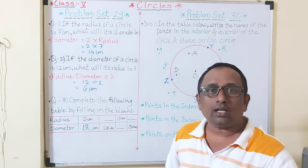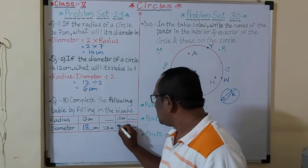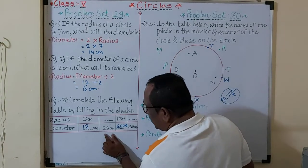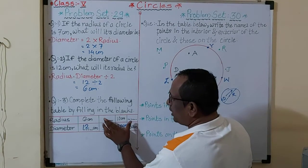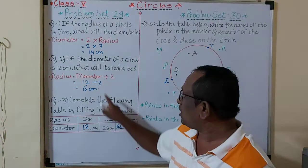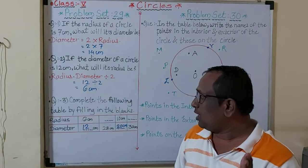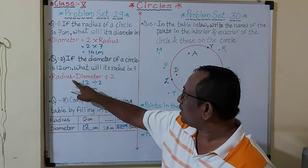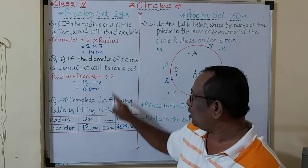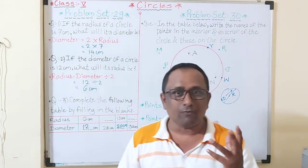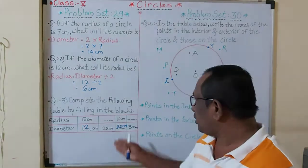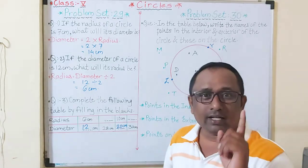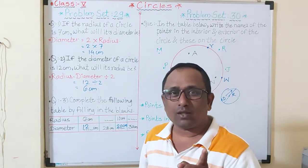Now here, diameter is given and we have to find the radius. To find the radius, we divide the diameter by 2 — take half of it. Radius = diameter ÷ 2. Here diameter is 28. If your tables are good you can write easily, otherwise do the division. Write your tables every day.